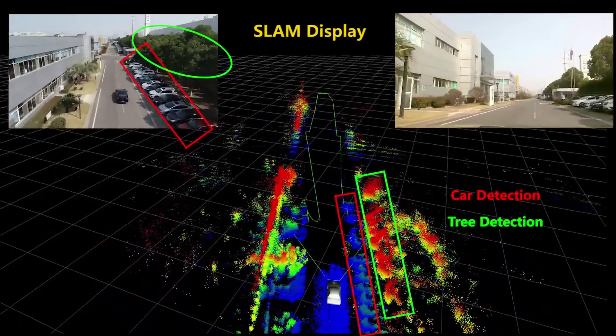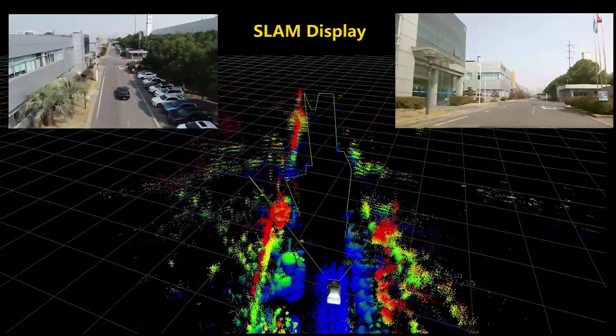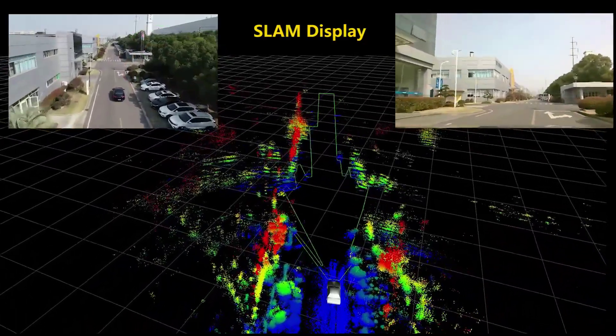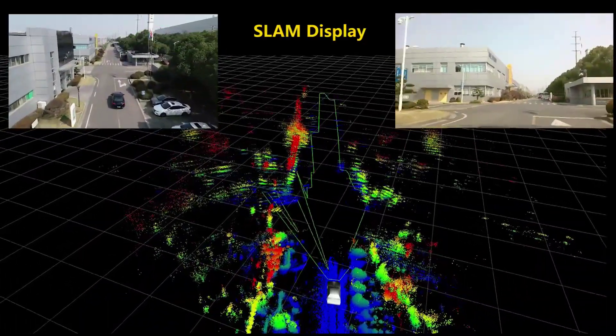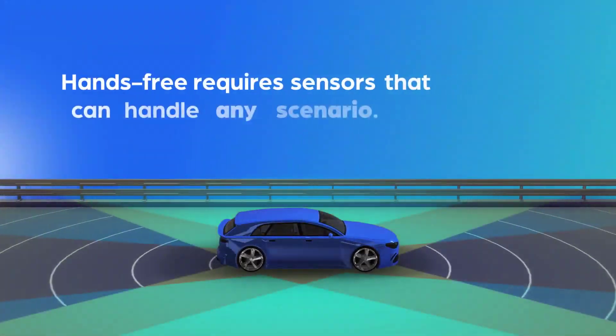This breakthrough enables vehicles to accurately track objects and differentiate between drivable and non-drivable areas in challenging conditions like fog, darkness, and glare, making it a critical component for next-gen systems that's been validated by leading OEMs and Tier 1 suppliers.